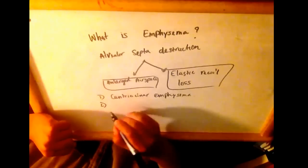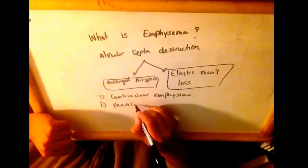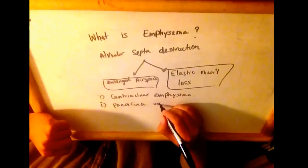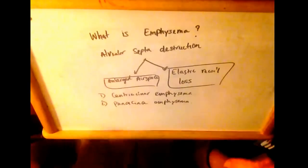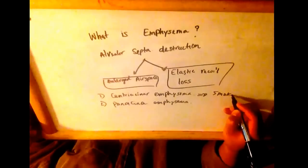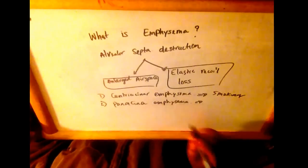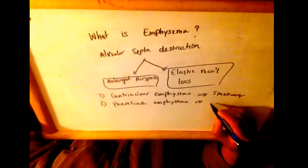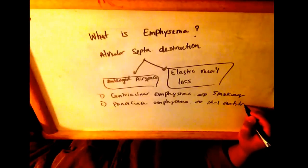Or the second one is panacinar emphysema. Centriacinar emphysema is caused by smoking, whereas panacinar emphysema is caused by alpha-1 antitrypsin deficiency.